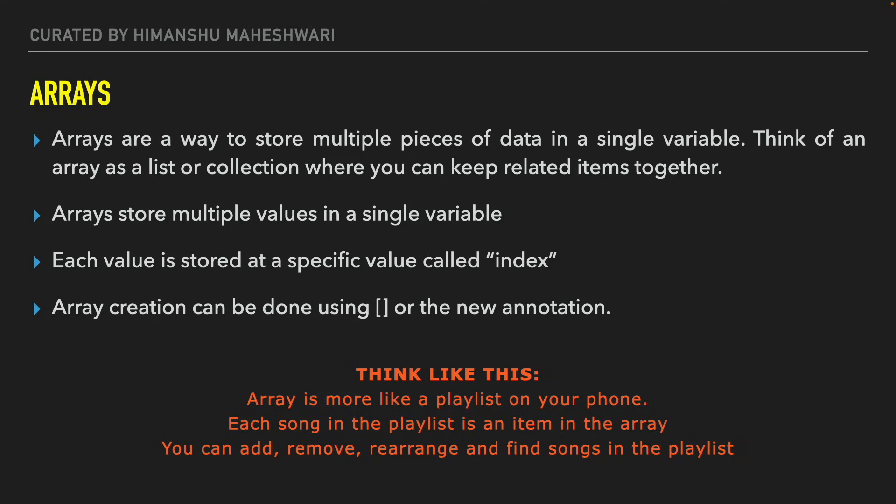First, I'd like to use this analogy: an array is more like a playlist on your phone. Each song in the playlist is an item in the array — you can add, remove, rearrange, or find any song in that playlist. If you use any music streaming platform like Spotify, Amazon Music, or YouTube Music, you can create your own playlist containing a list of songs. You can consider that playlist as an array, because it is a collection of songs. You can create multiple playlists — that's multiple arrays.